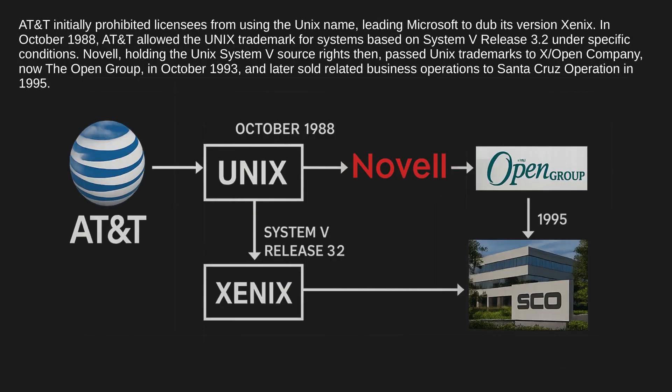AT&T initially prohibited licensees from using the Unix name, leading Microsoft to dub its version Xenix. In October 1988, AT&T allowed the Unix trademark for systems based on System V Release 3.2 under specific conditions. Novell, holding the Unix System V source rights, then passed Unix trademarks to X/Open Company — now the Open Group — in October 1993, and later sold related business operations to Santa Cruz Operation in 1995.